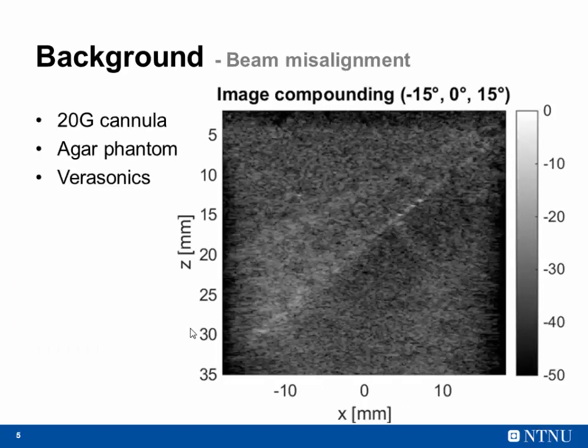This is an actual compounded image with three different angles. Again, it's a needle in an agar phantom. You may see that there is this part of the line over here which corresponds to the reflection in the actual needle, and some other shape over here that corresponds to the beam misalignment. This could be quite annoying for clinicians when they are trying to perform some operations.